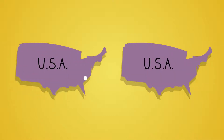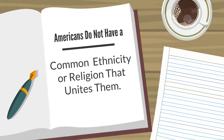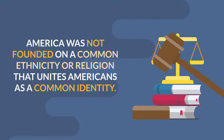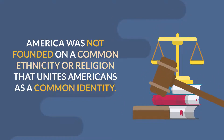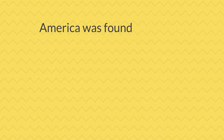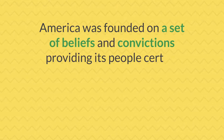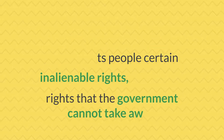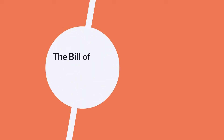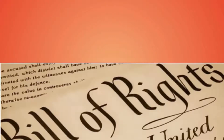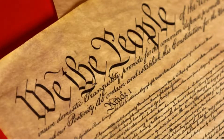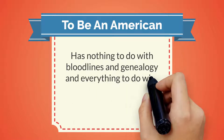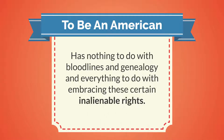First, let's talk about what America is and is not. America was not founded on a common ethnicity or religion that unites Americans as a common identity. Rather, America was founded on a set of beliefs and convictions providing its people certain unalienable rights, which are rights that the government cannot take away. These rights are embedded in the Bill of Rights of the U.S. Constitution. To be an American has nothing to do with bloodlines and genealogy and everything to do with embracing these certain inalienable rights.